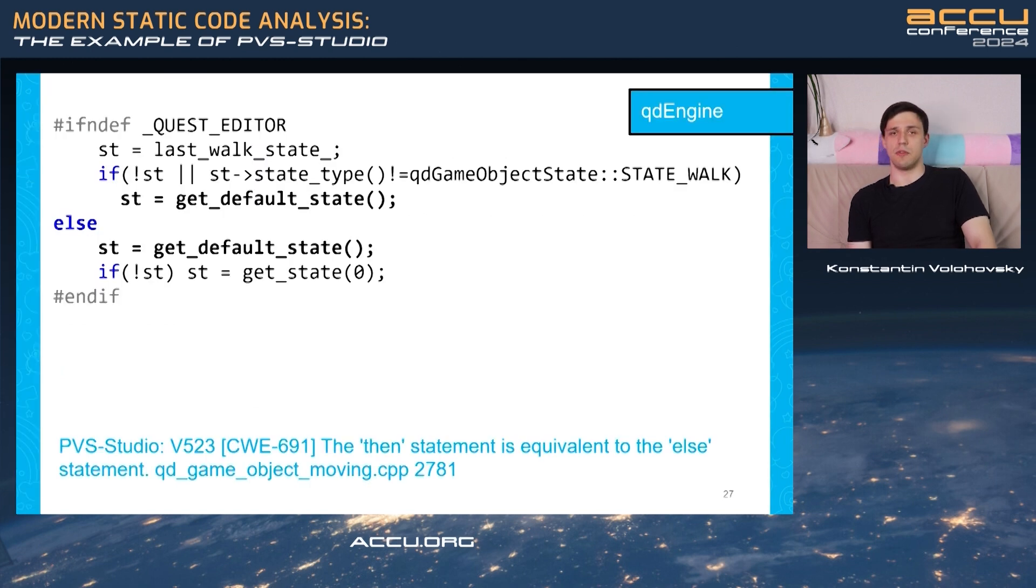And the last error I will show you today. Here, the analyzer tells us that then and else branches of the if statement are same. But is this really a main issue? Take a closer look at the formatting. It appears that developer wanted to use preprocessor directive else, but they forgot the hash symbol. Thus, they alter the program's logic. Even though analyzer pointed at a slightly different error, a developer can find out a real error by examining the code.